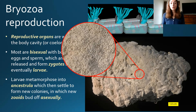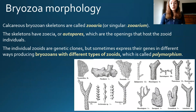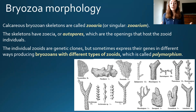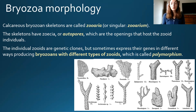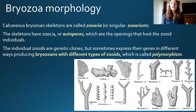Sometimes bryozoans are mistaken for sponges or certain types of corals, but now we'll get into how to identify them in fossil form. The calcareous bryozoan skeletons that get preserved are called zoaria (singular: zoarium), and these skeletons have zoecia or autopores — the openings that host the zooid individuals. Even though individuals are technically genetic clones of one another, they sometimes express their genes very differently, producing a wide variety of different zooid types and opening structures within their zoarium. This is called polymorphism.